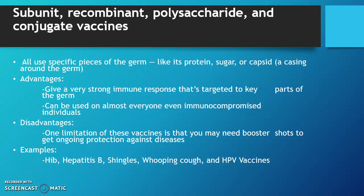Additional vaccine types include subunit, recombinant, polysaccharide, and conjugate vaccines. All of these use specific pieces of the germ, like its protein, sugar, or capsid. The advantage of these vaccines is they give a very strong immune response that's targeted to key parts of the germ, and they can be used on almost everyone, even immunocompromised individuals.